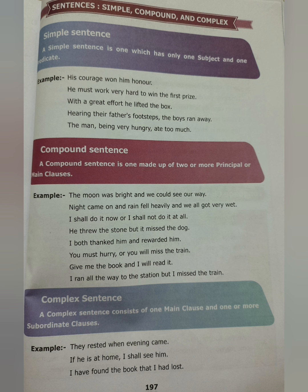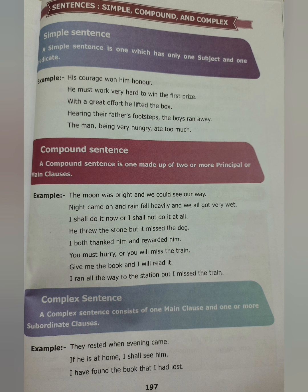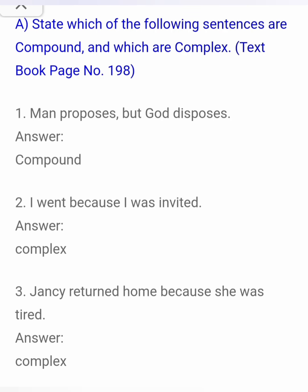Simple, compound, and complex sentences. A simple sentence has only one subject and one predicate. A compound sentence is made of two or more main clauses joined by a conjunction. A complex sentence contains one main clause and one or more subordinate clauses — subordinate clauses need something to complete their meaning. For example: 'If he is at home, I shall see him' — 'if' is the subordinating conjunction. A compound example: 'The moon was bright and we could see our way' — two sentences joined by a coordinating conjunction, each giving meaning on its own.